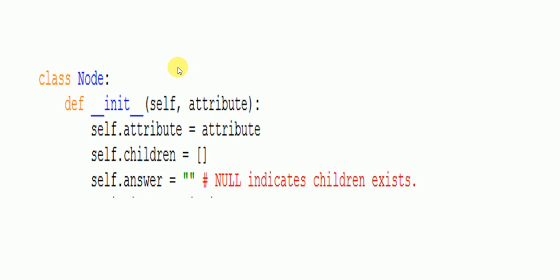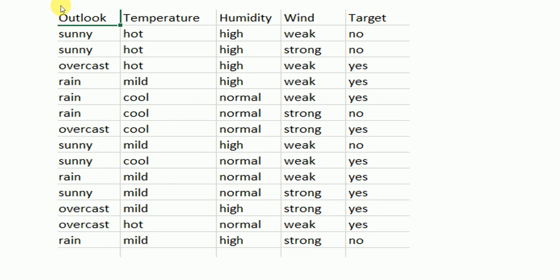Before calling build tree, the node class is defined. The node initializes with a self attribute, and has children — these attributes form the nodes used in the tree. The input has four attributes: outlook, temperature, humidity, and wind plus target. There are five no's and nine yes values in the dataset, each having their corresponding examples.